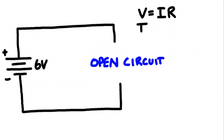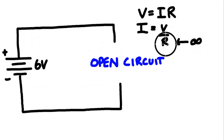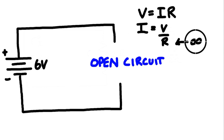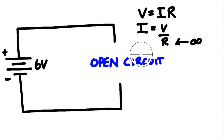According to Ohm's law — V = IR — we can rearrange for current: I = V/R. In the case of an open circuit, we treat the break as if we have an infinite resistance. When the denominator tends to infinity, the fraction tends to zero, so the current tends to zero. For an open circuit, we have no flow of electricity.